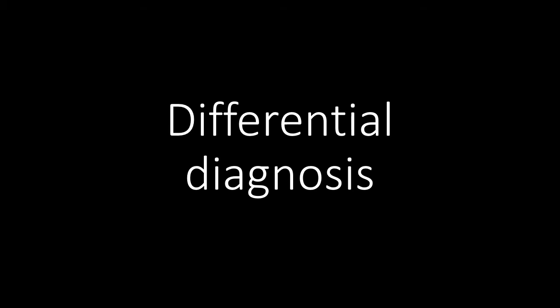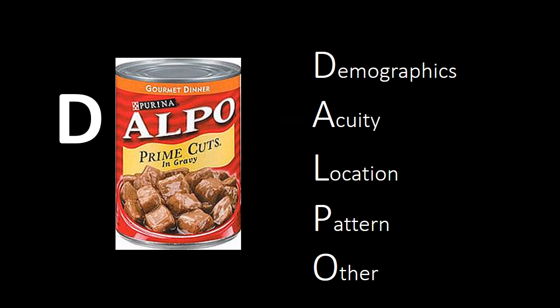When thinking about developing your differential diagnosis, it's important to have a simple framework that you use for each patient. I'll give you the framework taught to me by one of my mentors: the D-ALPO approach. D stands for Demographics or Brief Clinical History, A for Acuity, L for Location, P for Pattern, and O for Other. We'll go through each of those elements here.